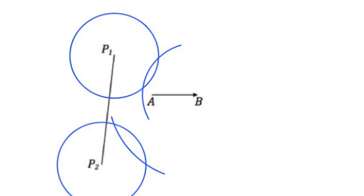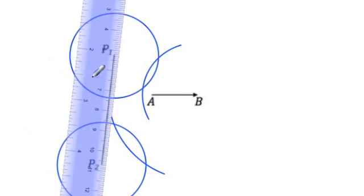Once you get your intersections for all the points that you needed to translate, we're going to take our ruler and connect the points of intersection.